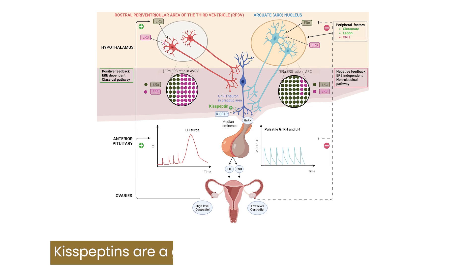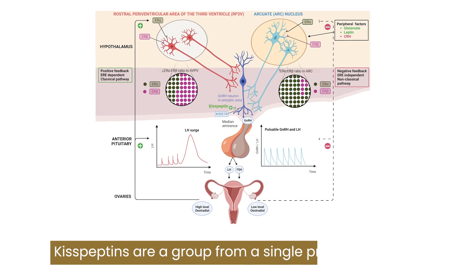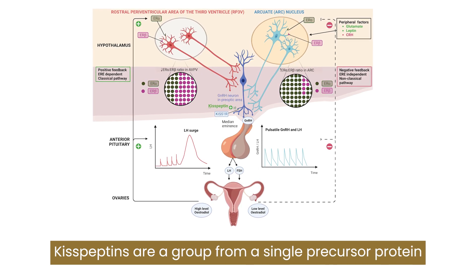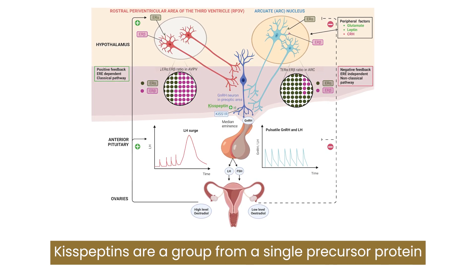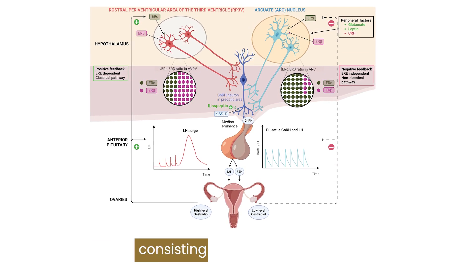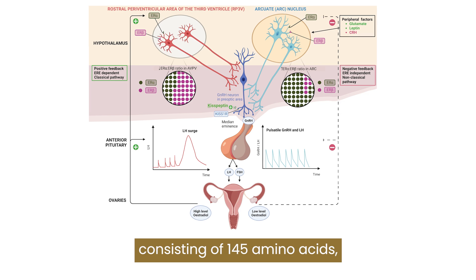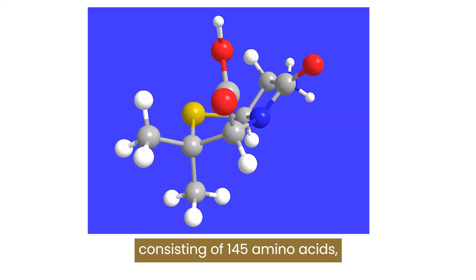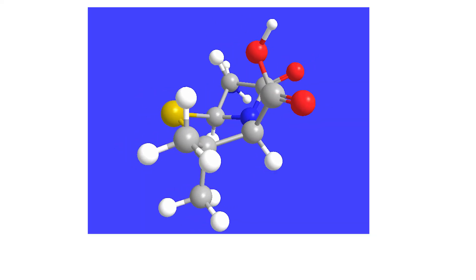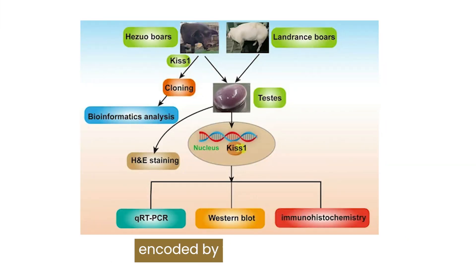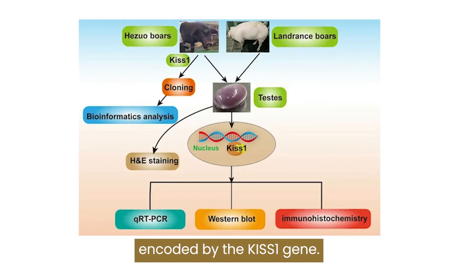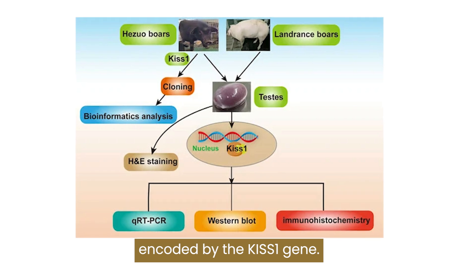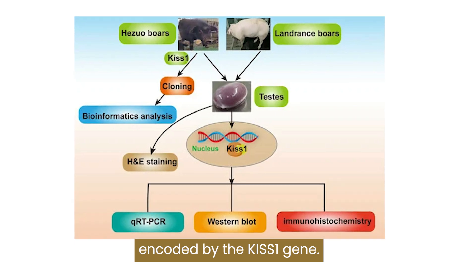Kisspeptins are a group from a single precursor protein consisting of 145 amino acids encoded by the KISS1 gene.